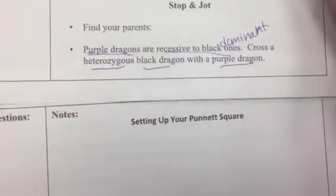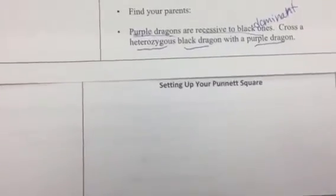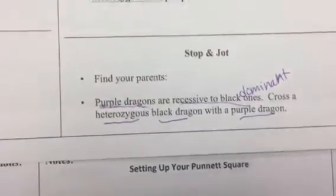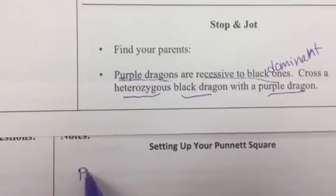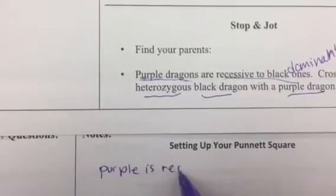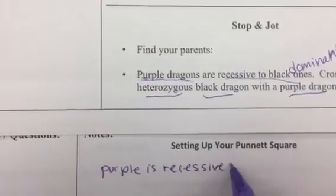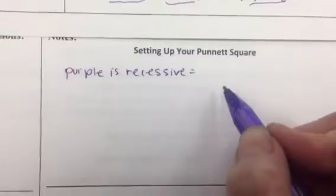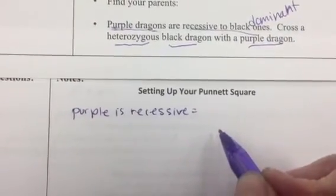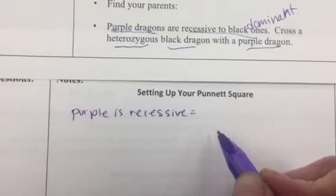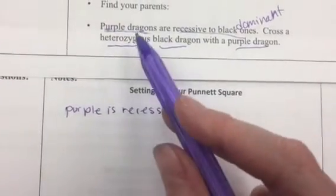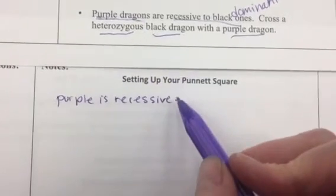Now, how do we set up our Punnett square? So a couple of things we need to do first — we need to make a key. So if you are a purple dragon, we know that purple is recessive. We can use any letters to represent our alleles, but we have to be consistent. So we want to talk about dragons — we can do D. So let's use the letter D.